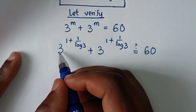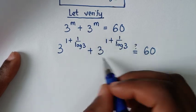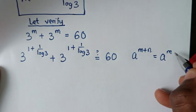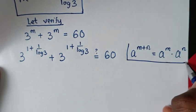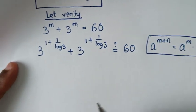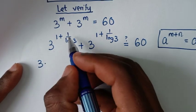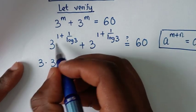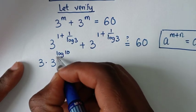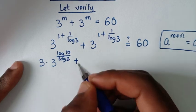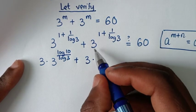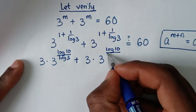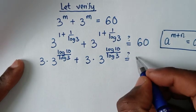Each term is 3 power of (1 plus 1 over log 3). This is in the form a^(m+n) which equals a^m times a^n. Applying this rule, it becomes 3 power of 1 times 3 power of (1 over log 3), which is 3 times 3 power of (1 over log 3). Note that 1 is the same as log 10 over log 3, so 3 power of (1 over log 3) equals 3 power of (log 10 over log 3).